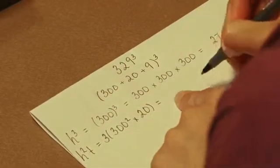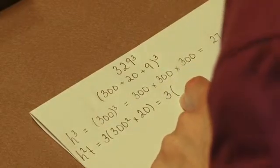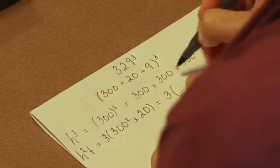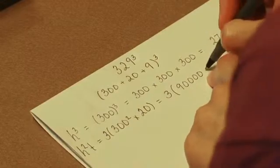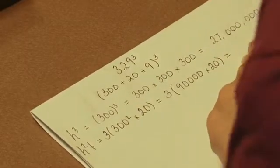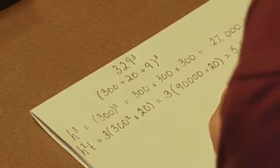So that's going to be equal to 3. Then in parentheses, I'll have 90,000 times 20. And that is going to equal 5,400,000.